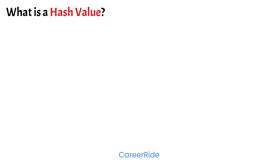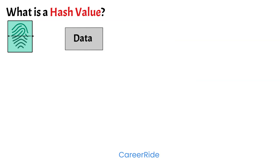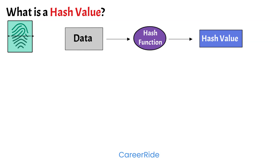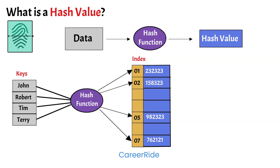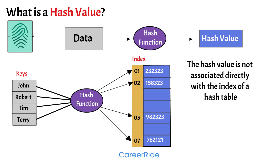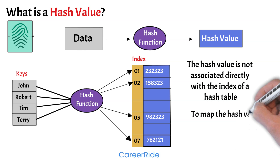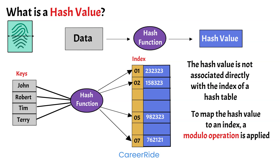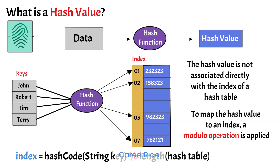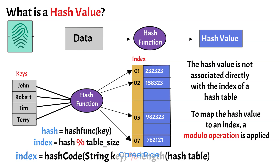What is a hash value? A hash value can be thought of as a fingerprint of the data that we want to store in the hash table. The data is processed through an algorithm and a unique numerical value is generated, which is the hash value. If the content of the data is modified in any manner, the value of the hash will also change significantly and it would be impossible to tell what has changed in the original content. The hash value is not associated directly with the index of the hash table because the hash value can be very large. Therefore, to map the hash value to an index, a modulo operation is applied with respect to the size of the hash table. In this method, the hash is independent of the hash table size and is then reduced to an index using the modulo operator.